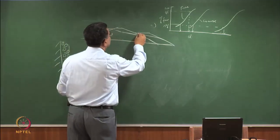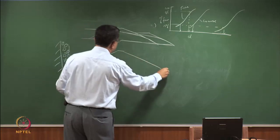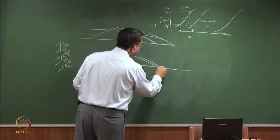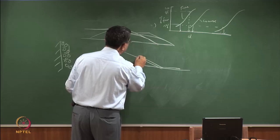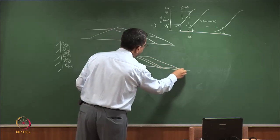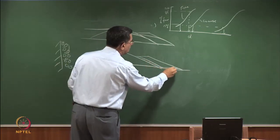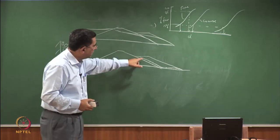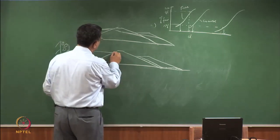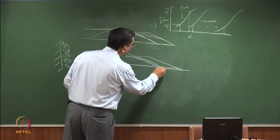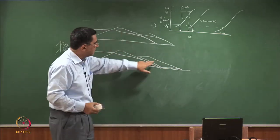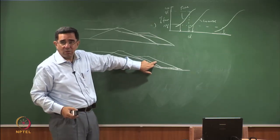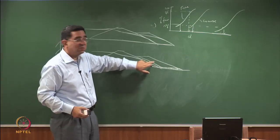On the downstream face, before you put the berm you put a sand drain - meaning a more permeable drain. Now you put the berm. What happens? You are now able to intercept the phreatic line. The phreatic line will come to the drain and go out from there. Your downstream slope is now the outer slope of the berm, which has no wetness and no water flowing parallel to it.